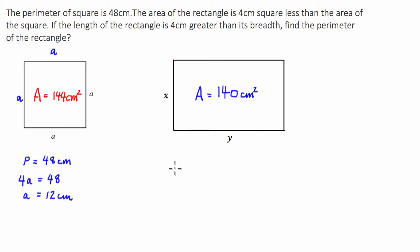We can also express the area as a product of the two sides. We know that the area of a rectangle is the length times the width. X times Y is equal to 140.